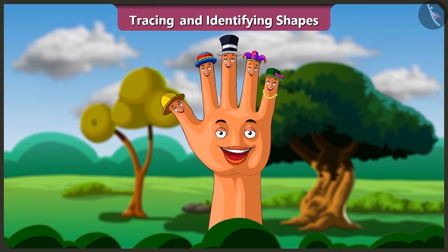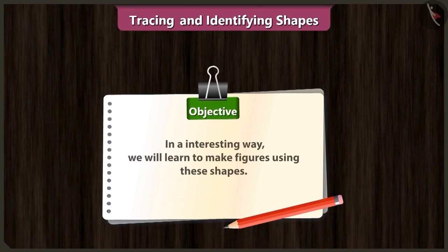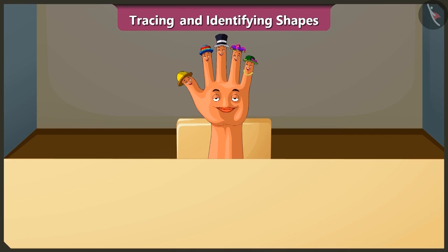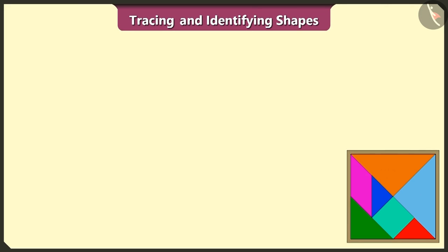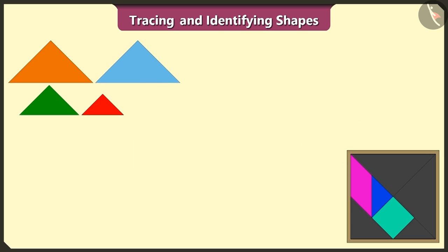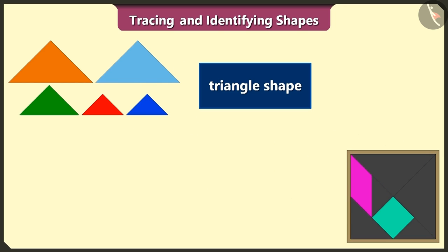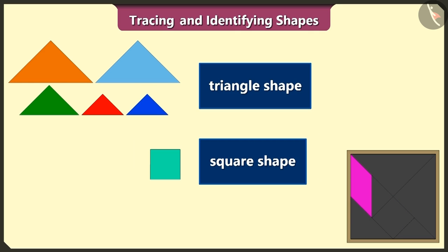Friends, we have learned to identify and trace shapes. Today, in an interesting way, we will learn to make figures using these shapes. This is a tangram — there are a total of seven shapes in it: one, two, three, four, and five triangle shapes, one square shape, and one quadrilateral.